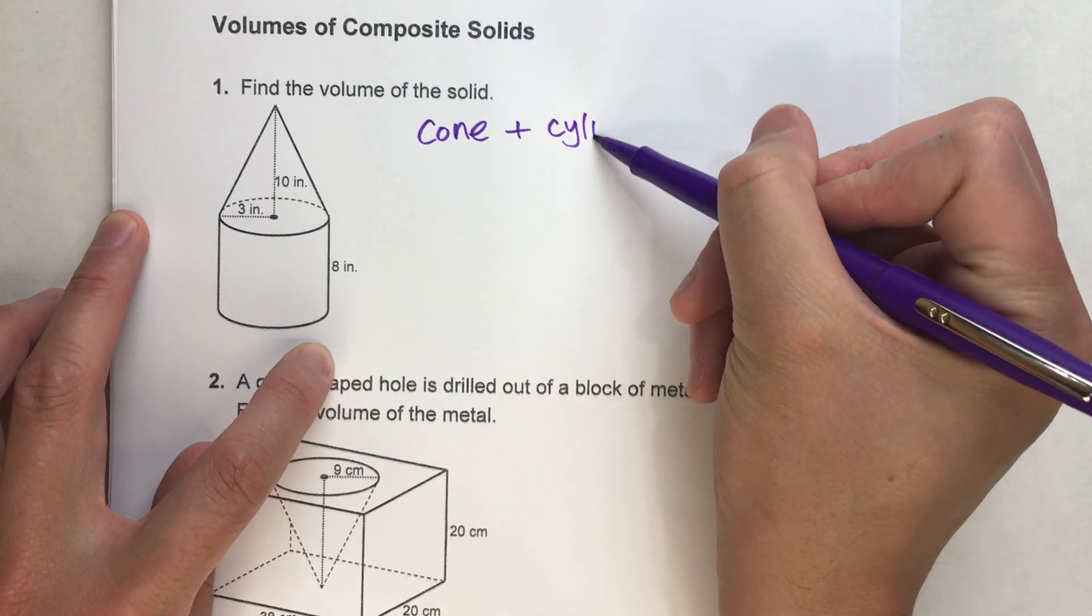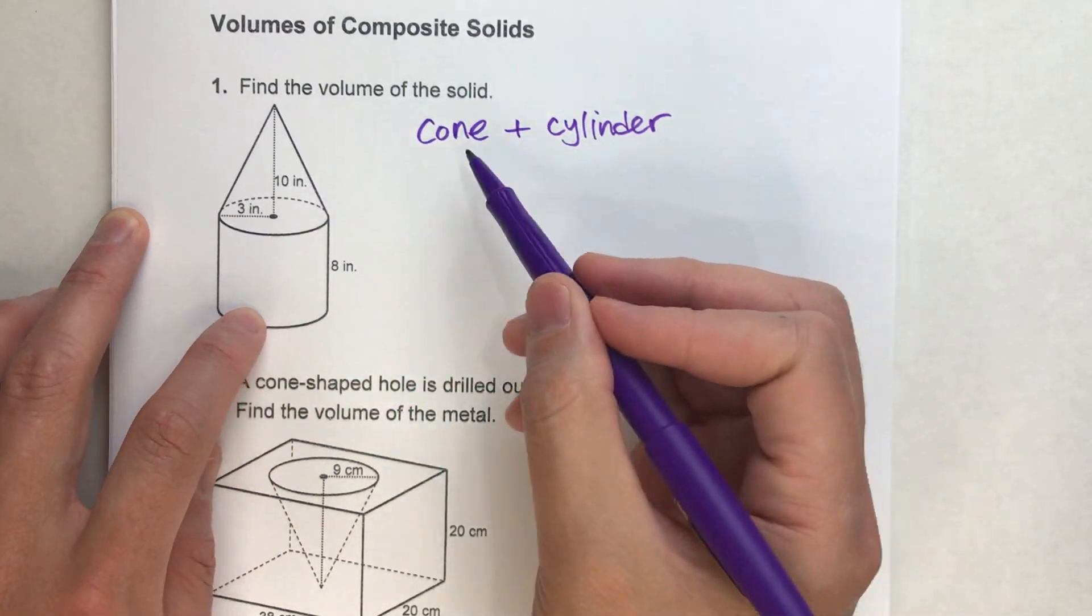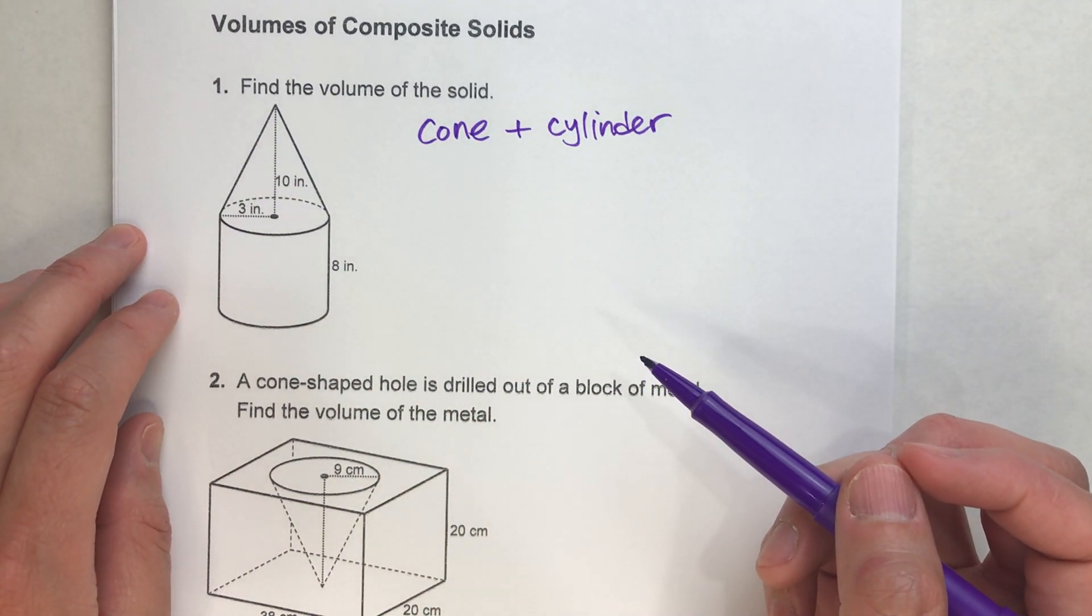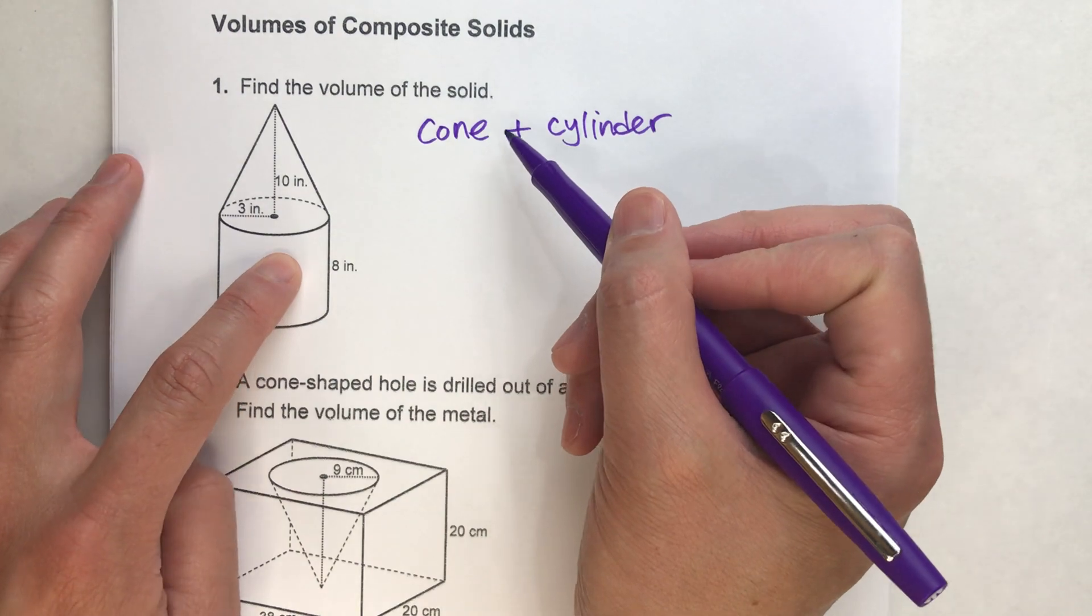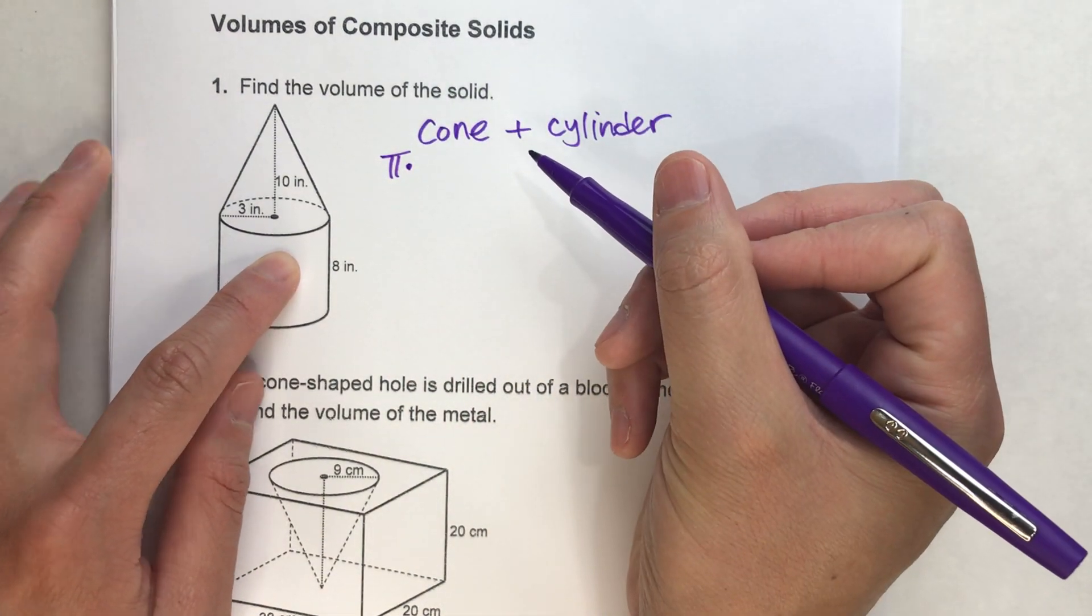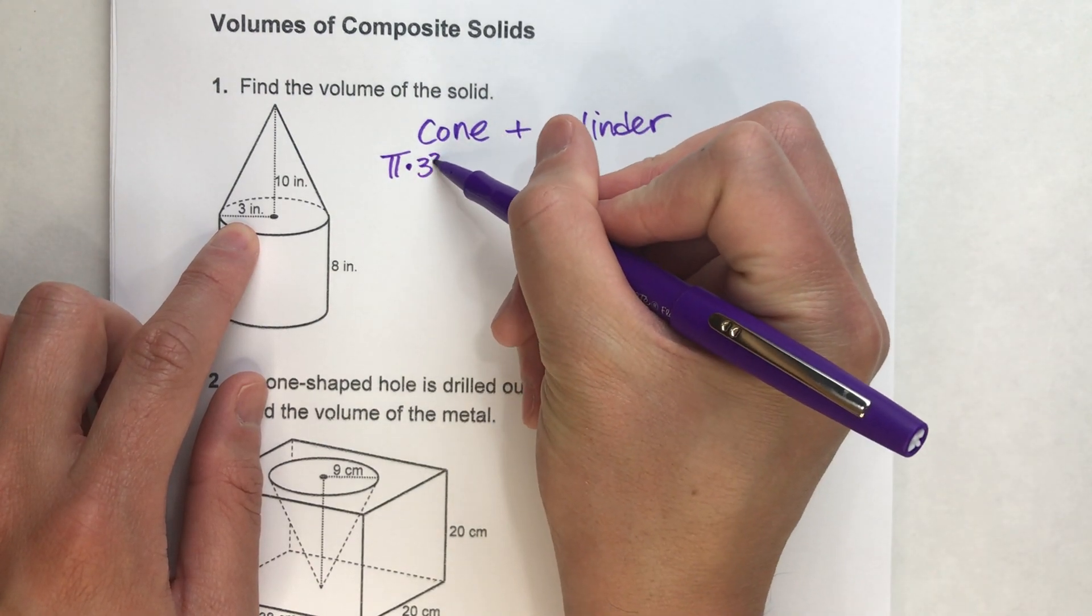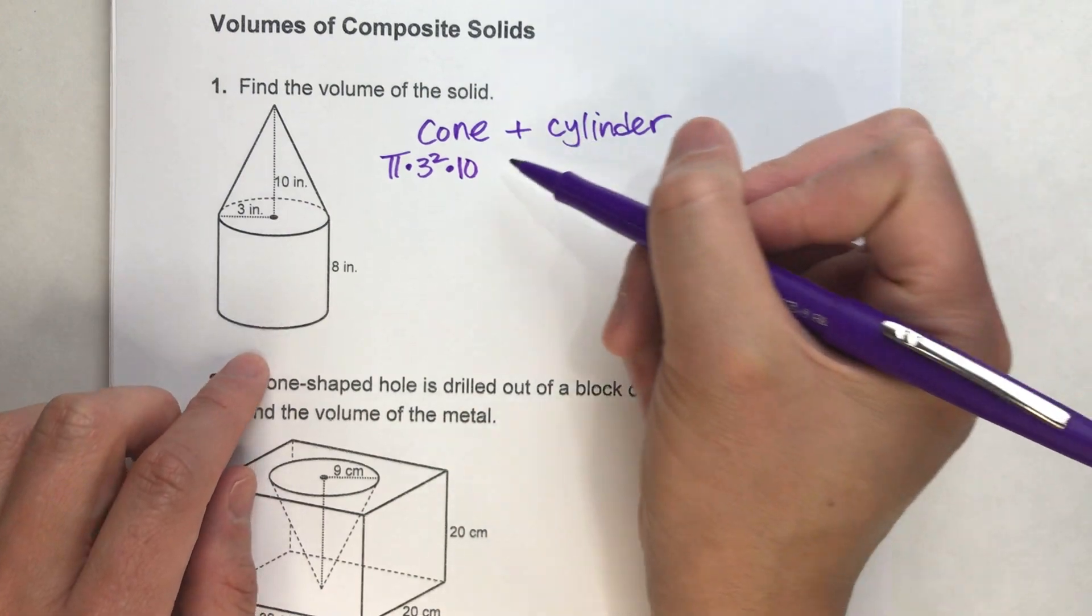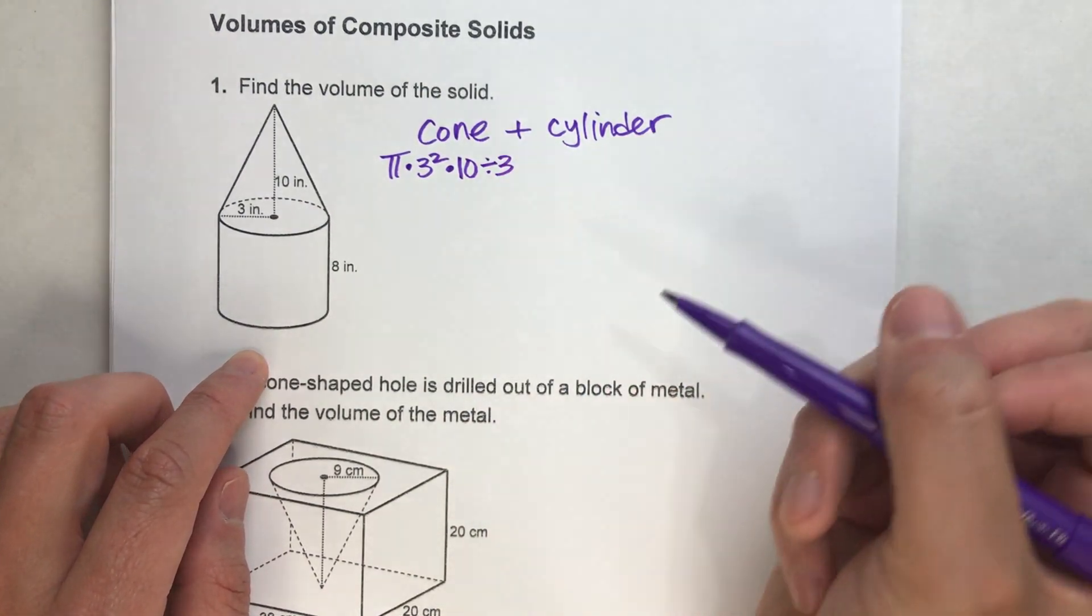So if we can find the volume of each of these parts and add them together, we'll have the volume of this whole thing. So let's start with the cone. Volume of a cone is pi times the radius squared times the height and then divide it by 3. So there's our cone.